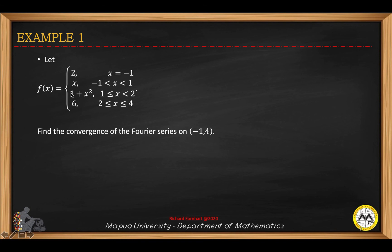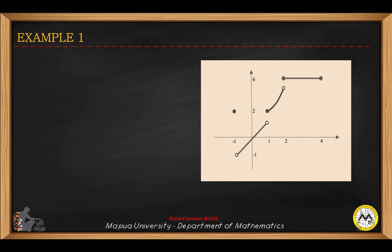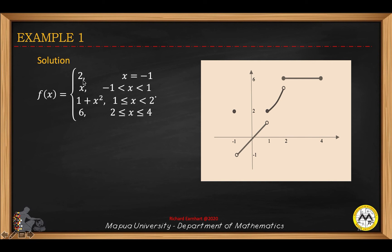Consider a piecewise continuous function f of x. We find the convergence of the Fourier series on the interval negative 1 to 4. If we graph the function, f of x equals 2 at x equals negative 1, which is just a point. Between negative 1 and positive 1, the function is x, a straight line. And then between 1 and 2, the graph is a parabola, 1 plus x squared.